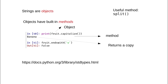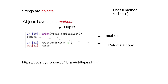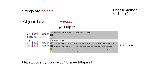Strings are objects and objects have built-in methods. We will see more about objects when we cover object-oriented programming, but for now just understand that an object is an abstraction of some real-world concept and it provides methods — functions which work on the objects. The string itself comes with lots of built-in methods. If 'fruit' is a string variable, you access its methods using dot notation: fruit.capitalize() capitalizes the first character of 'banana'.